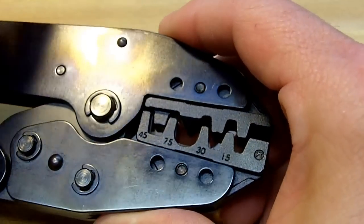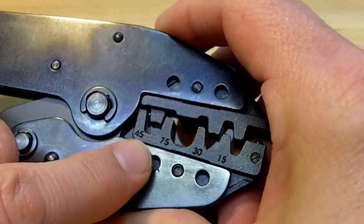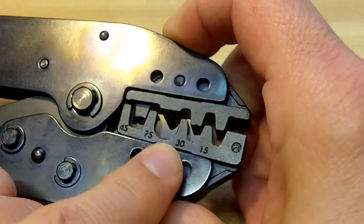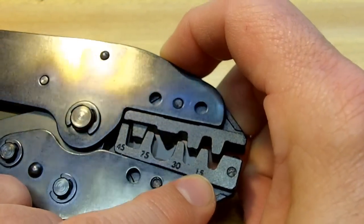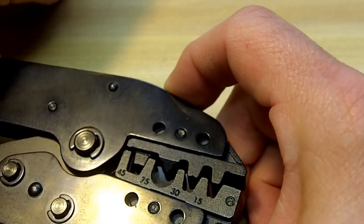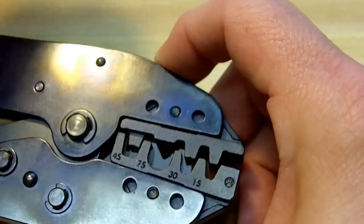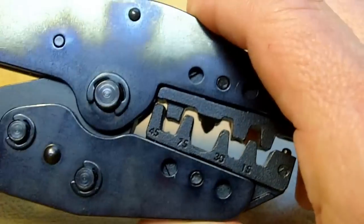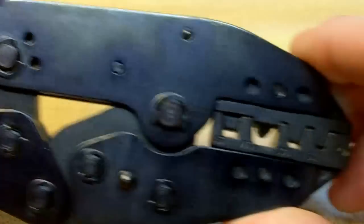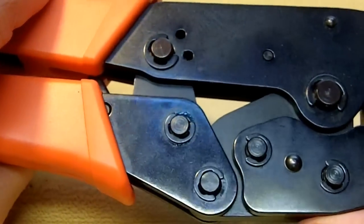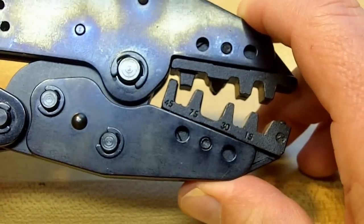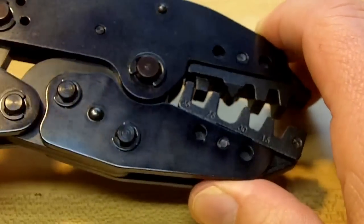Now, the crimp tool, you'll see, has the different markings in the die here for 45 amp, 75 amp, 30 amp, and 15 amp connectors. And like I say, the ones I'm using are the 30 amp size. So, I want to use this 30 amp. Now, the crimper works very well. You have to compress it all the way before it will release. So, if you do that, you know it crimped, it did a proper crimp, the right compression.